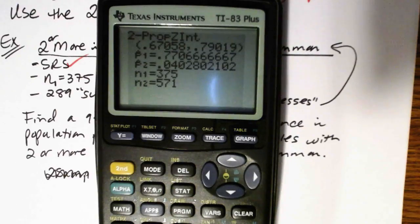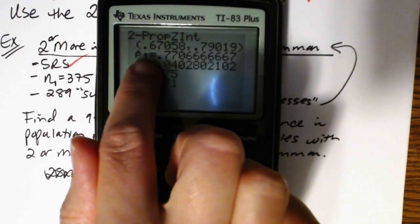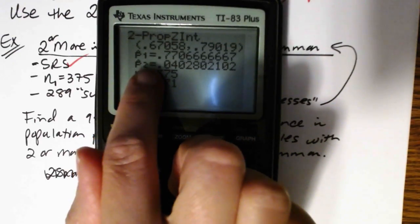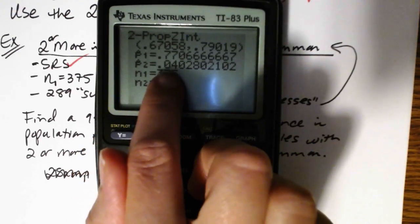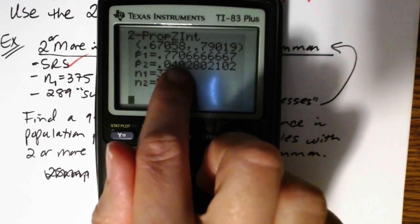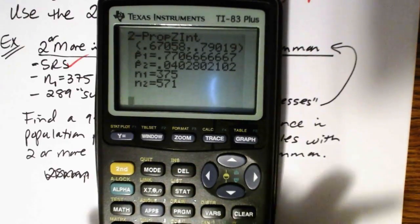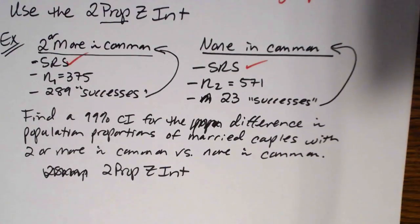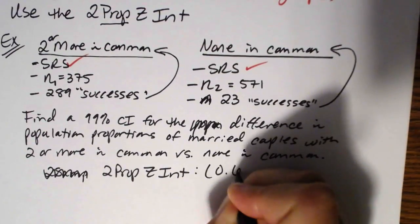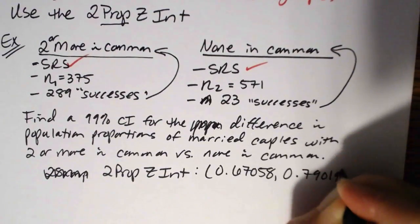Here's what we get. The calculator gives us the interval at the top, along with p1-hat — the proportion of successes in the first sample — which was about 77%, and p2-hat — the proportion in the second sample — which is about 4%. So if we're asking whether there's a difference between the two groups, there clearly is. The interval we got was 0.67058 to 0.79019.